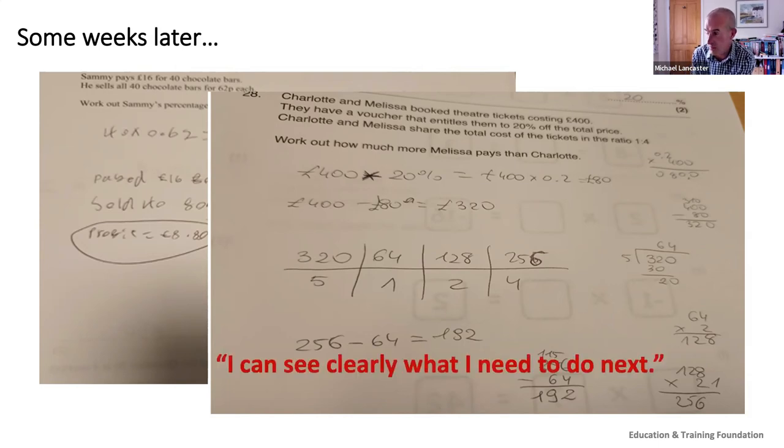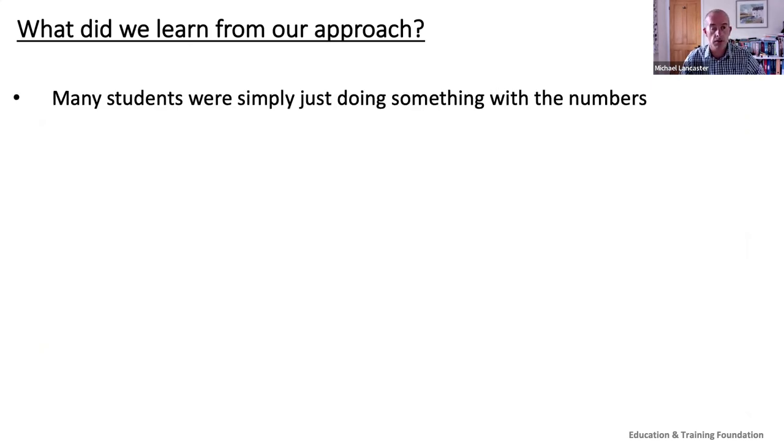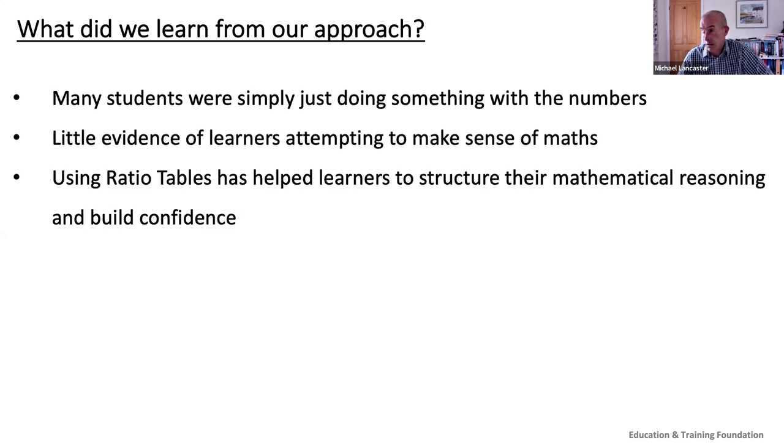I forgot the most important bit - this is the quote when Serena interviewed this student: using the ratio table I can see clearly what I need to do next. Okay, what did we learn from our approach? Many students from the responses to the pre-intervention question were simply just doing something with the numbers and didn't relate it to the context. There was little evidence of learners attempting to make sense of the maths. They had no facility to check whether it was reasonable or not. Using the ratio tables has helped learners to structure their mathematical reasoning and build confidence.